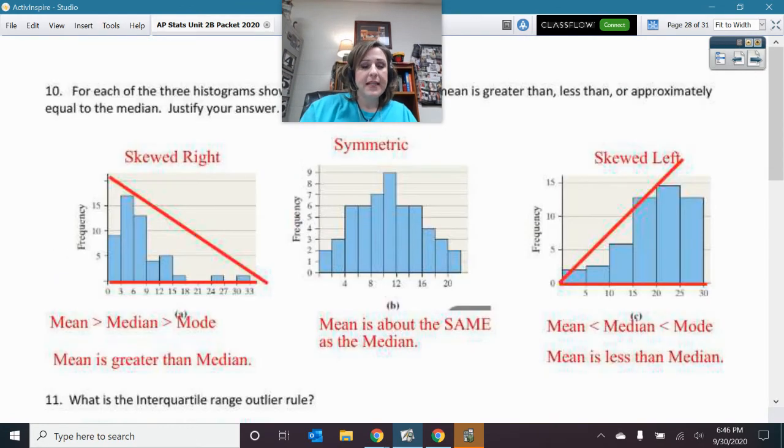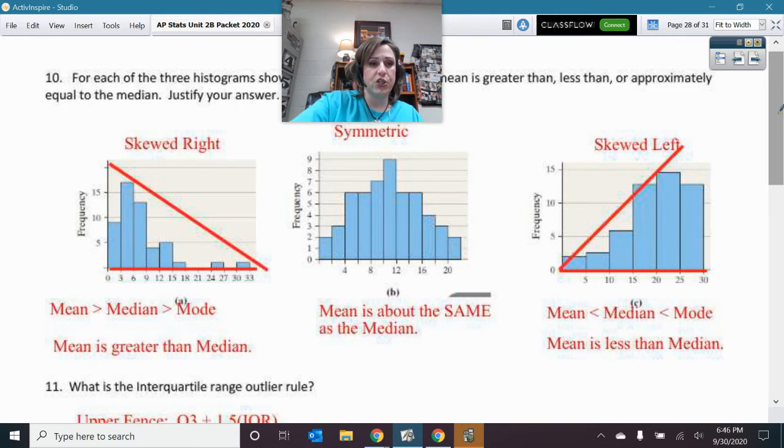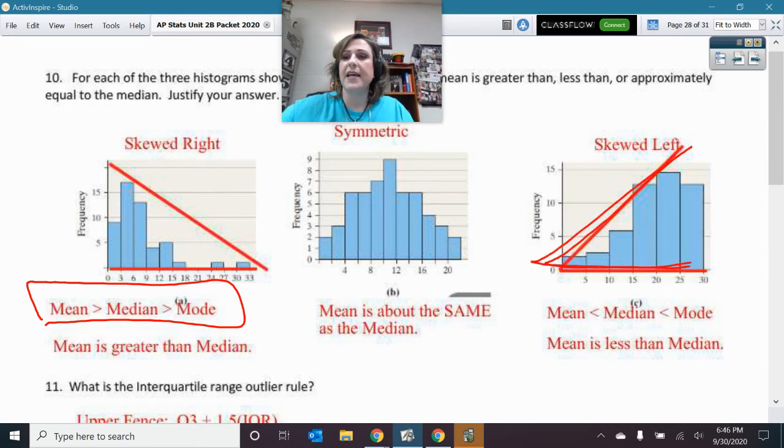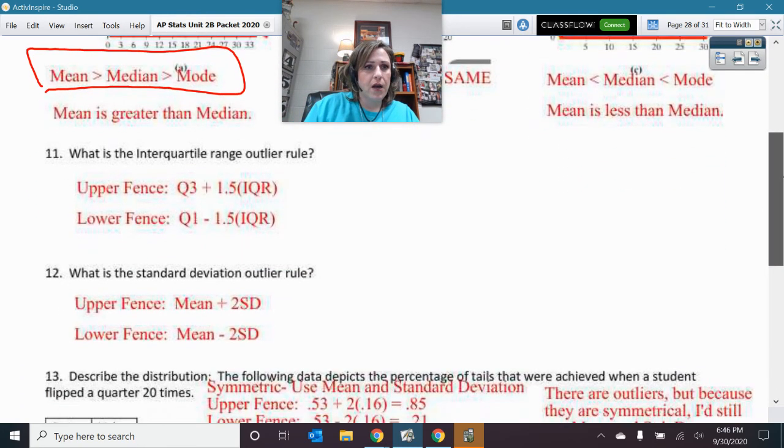All right. Let's take a look at this. Make sure you know that relationship between shape, mean, and median. So here's your skewed right. So when you write mean, median, and mode, you know that the mean is greater than the median and greater than the mode. Symmetric. So these are about the same. Skewed left. Points to the left. Go with the shape of it. The inequality mean is less than the median.